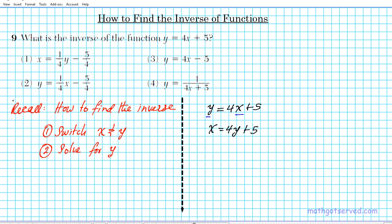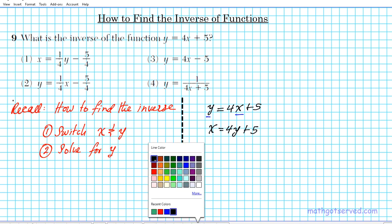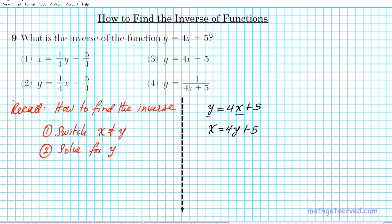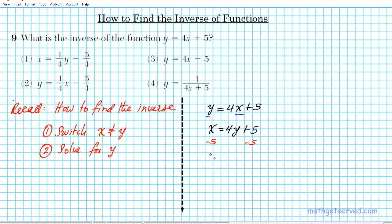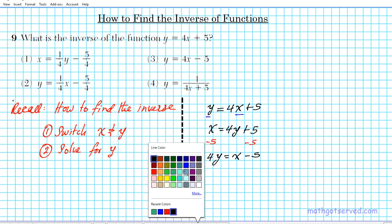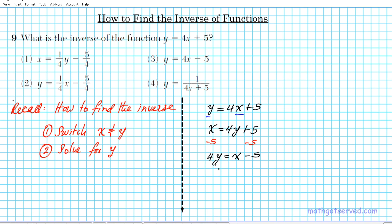Now just solve for y. It's a two-step process: subtract 5 from both sides, then divide by 4. We'll subtract 5 from both sides. Switching the equation around, we have 4y equals x minus 5.